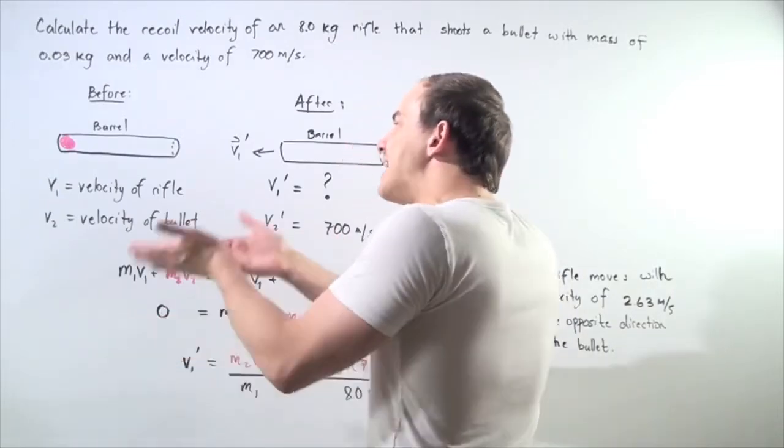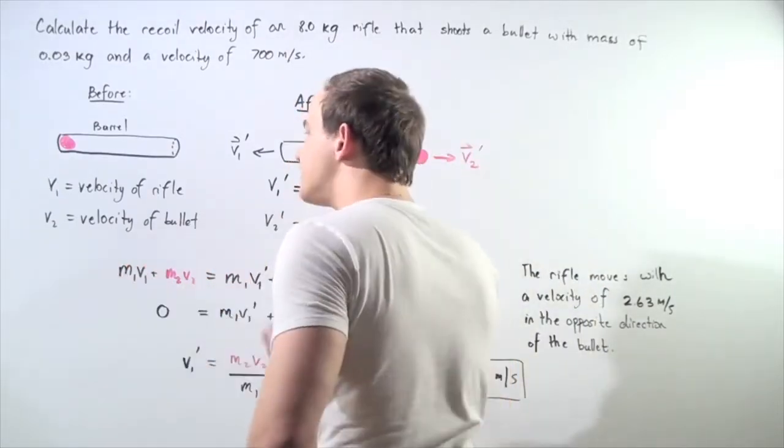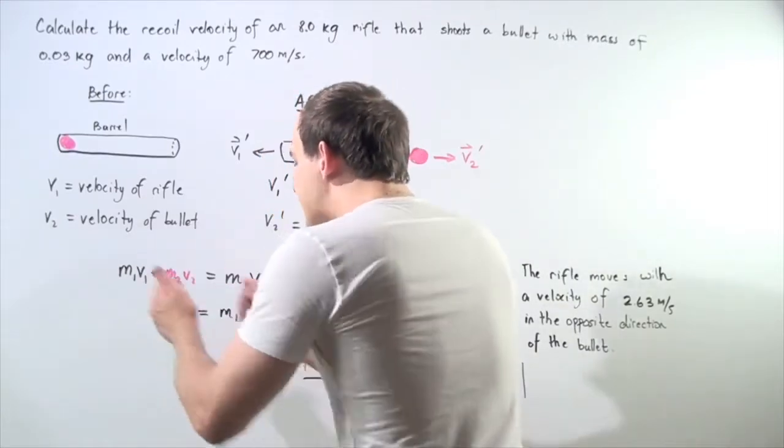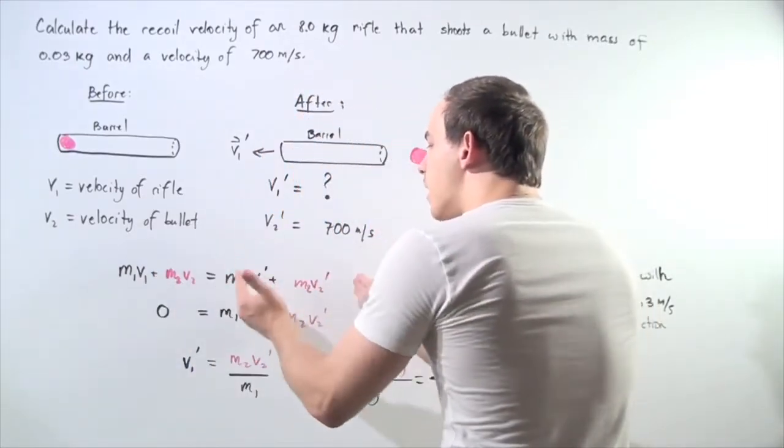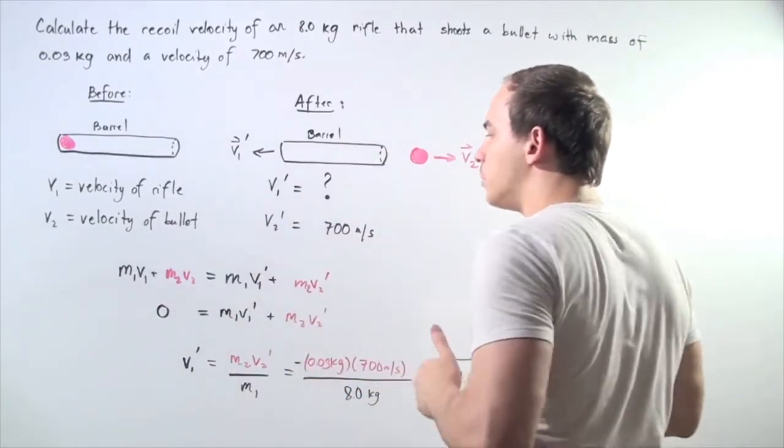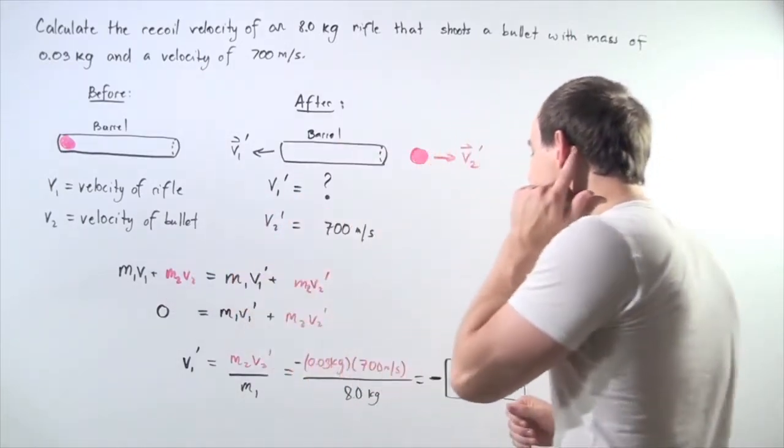That means if we sum up the momentum of the rifle, barrel and the bullet system, the sum will give us 0. So after we shoot the bullet, if we sum up the momentum then, that should also give us 0.